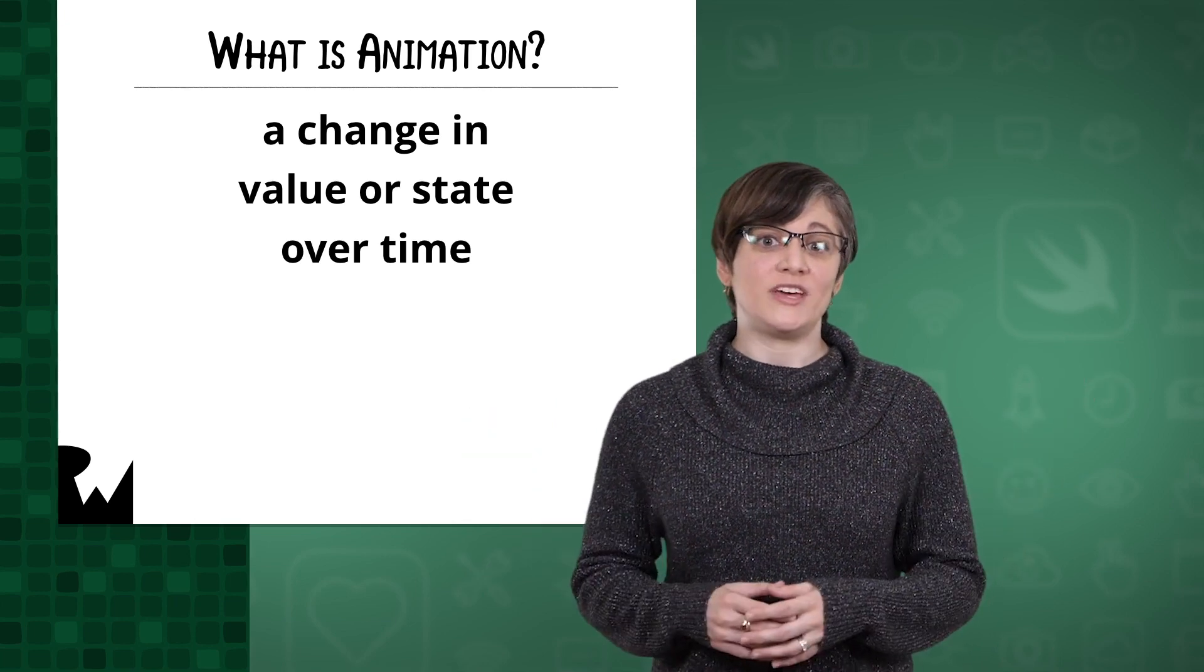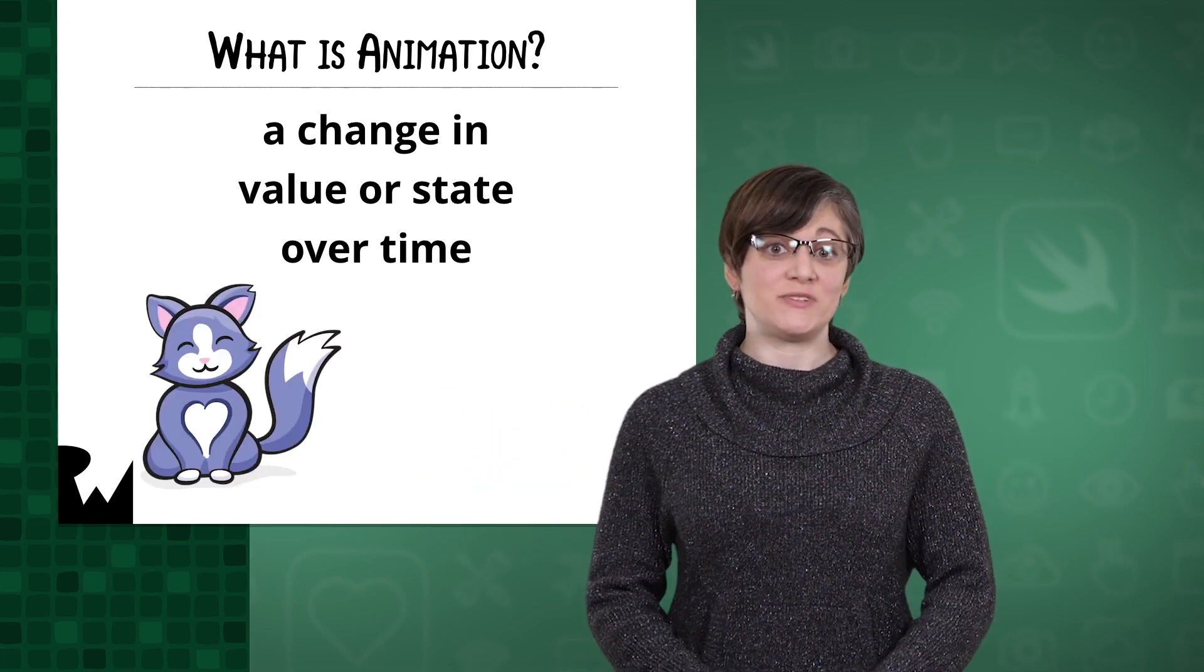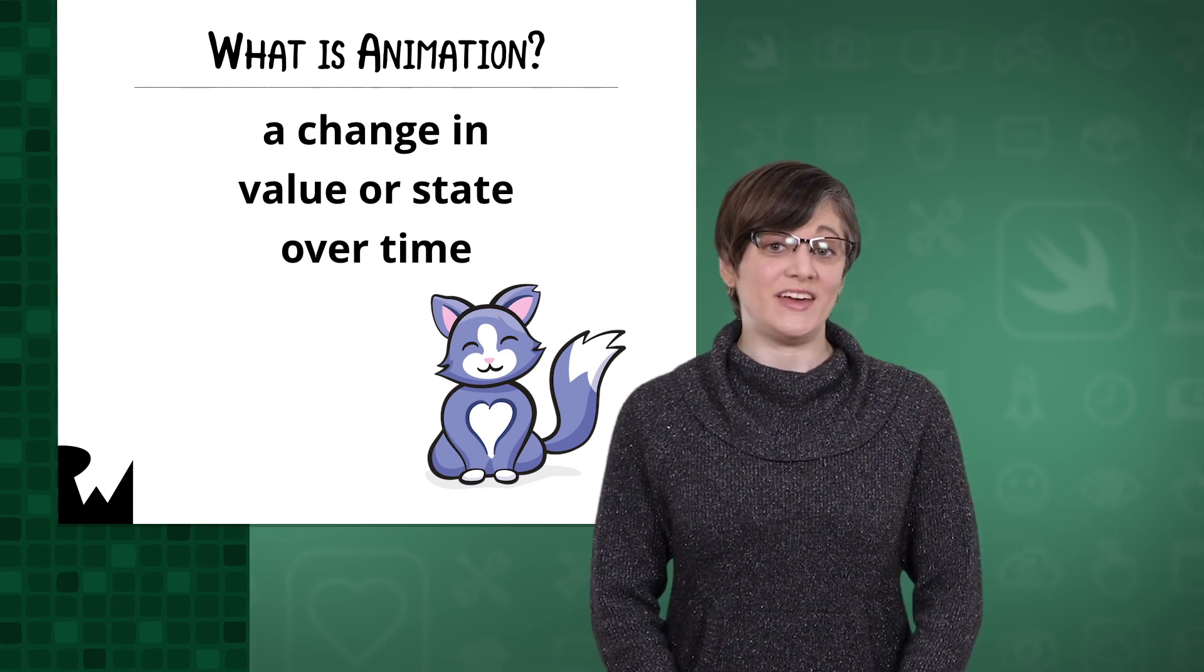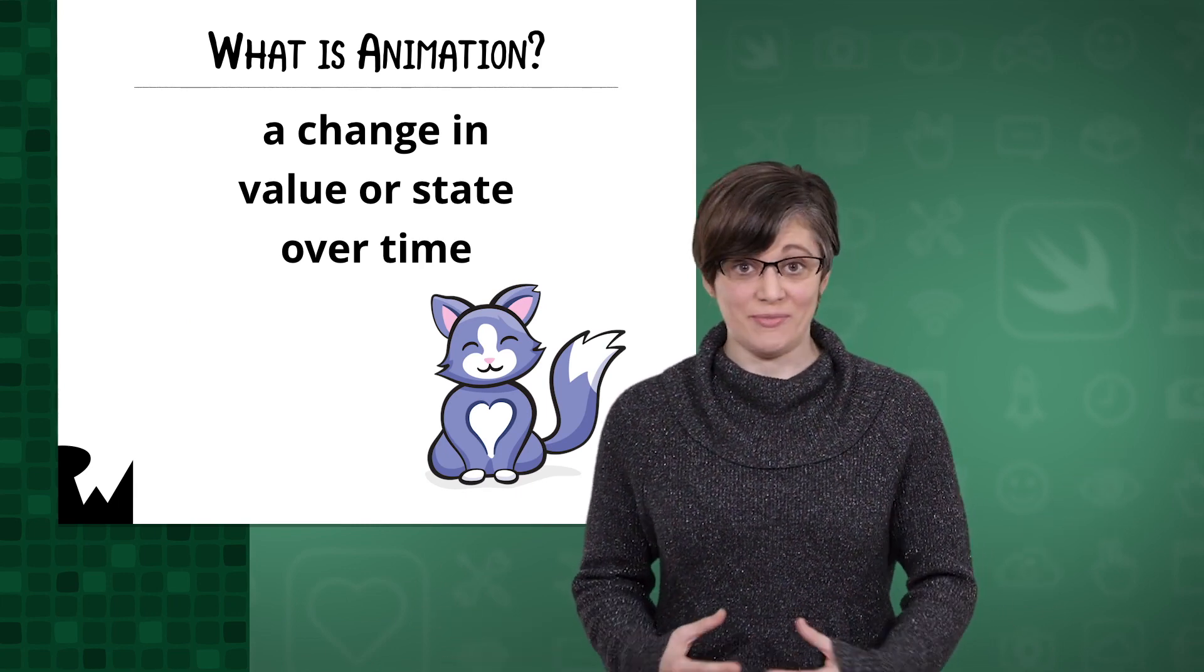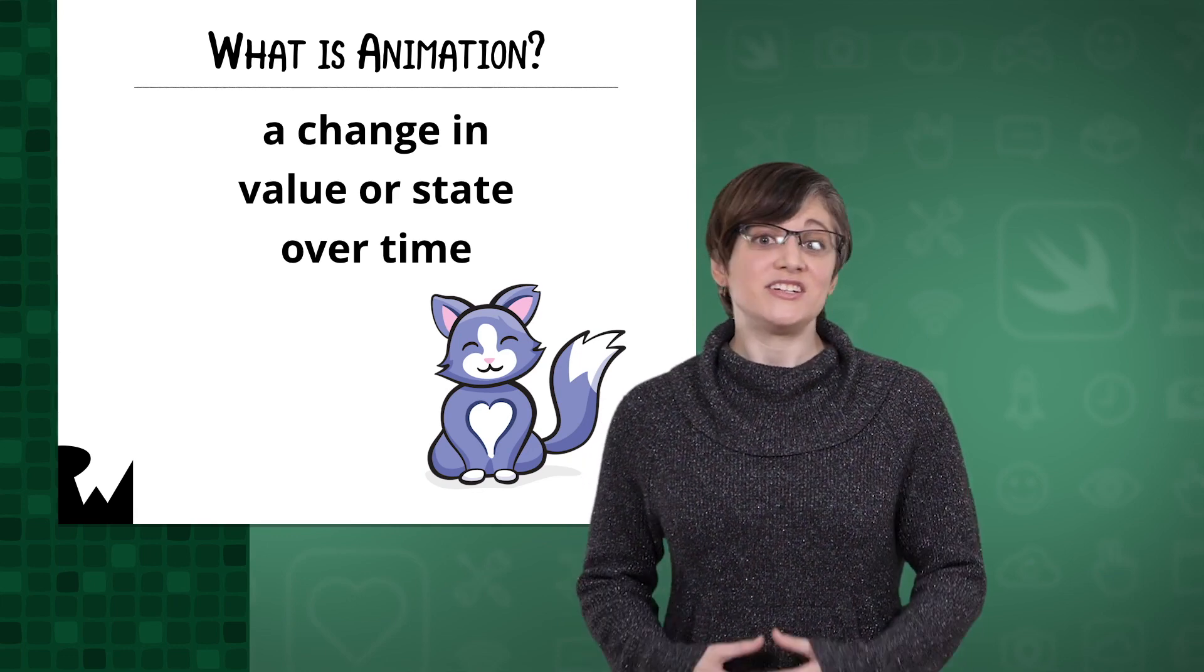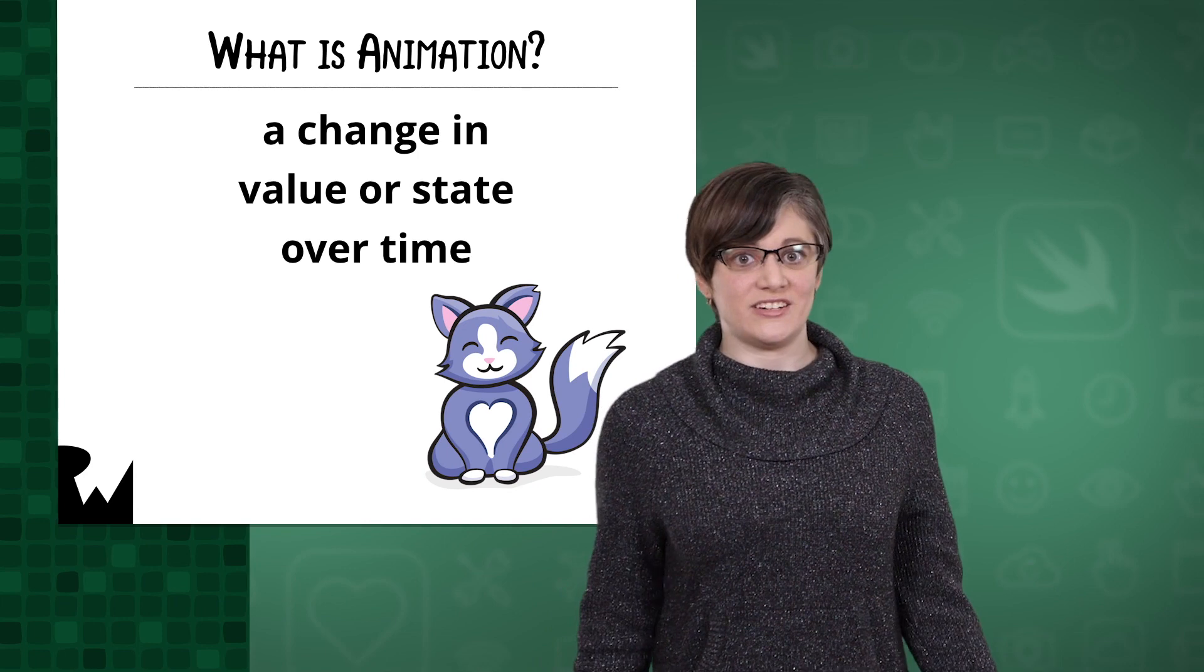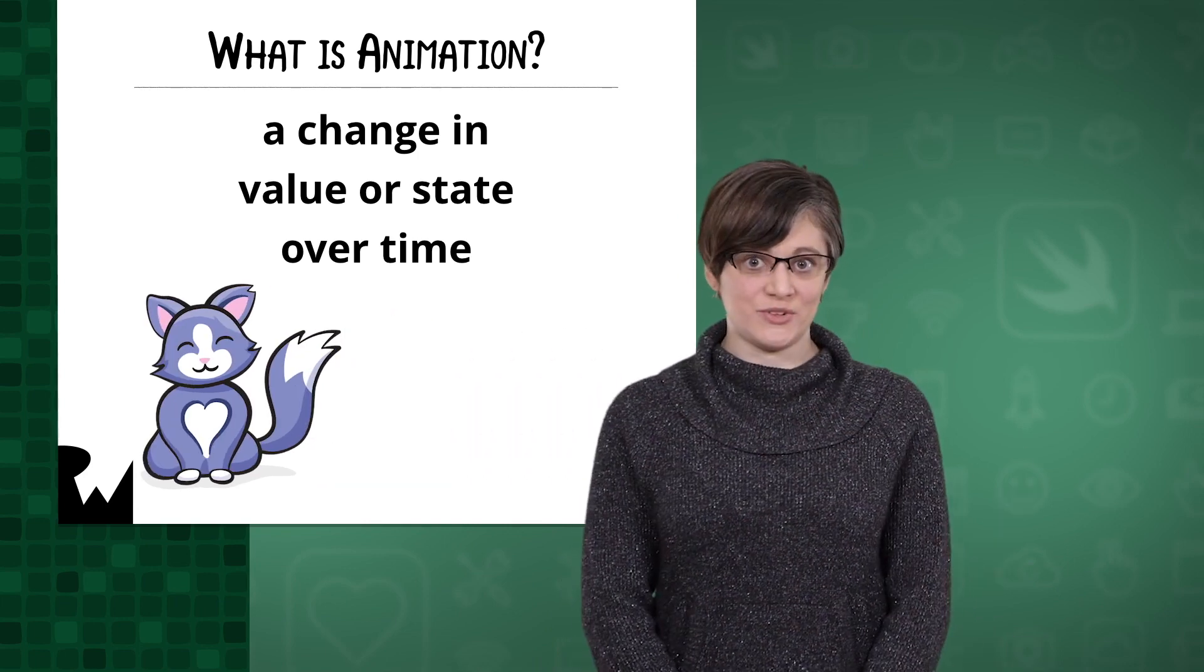If you take this cat and change its position from point A to point B, it just appears at point B. And technically, that is a very, very short animation. Now, change the cat's position over a perceivable period of time, like half a second. That's the kind of animation we're talking about.